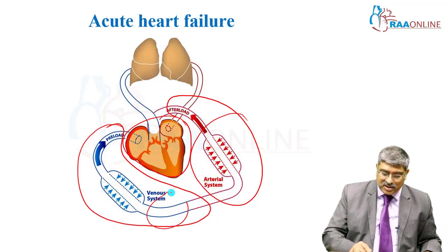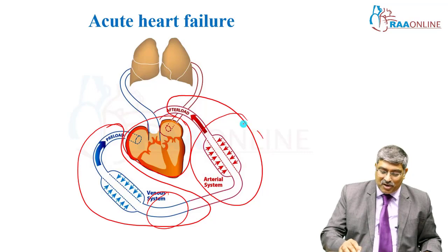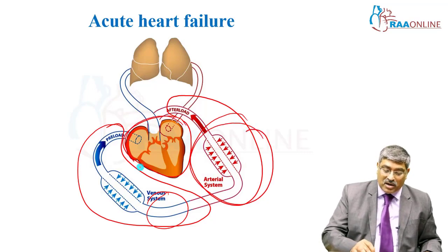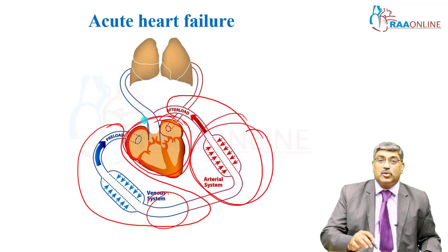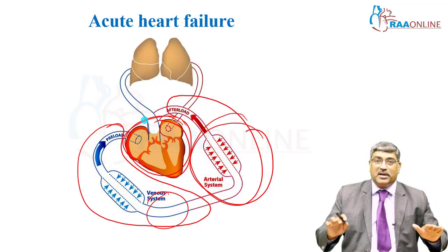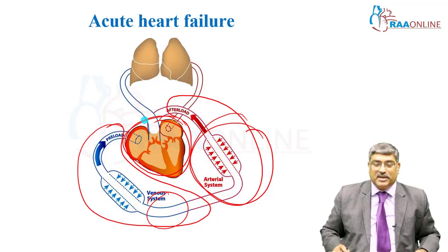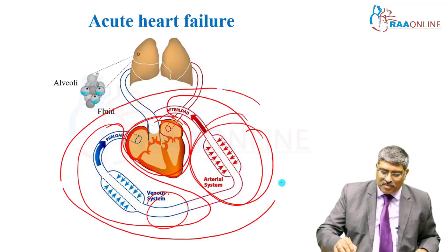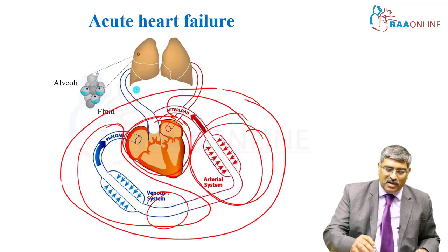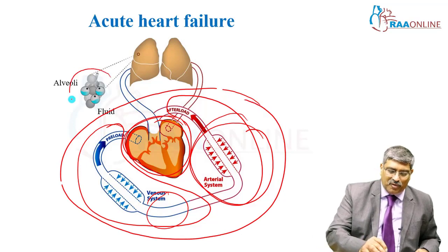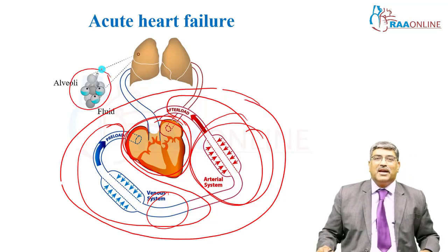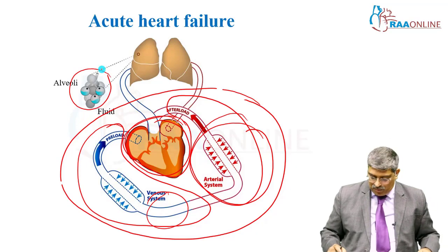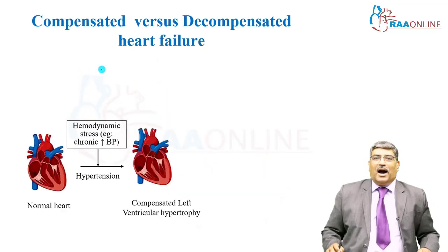Your volume management has to be accurate, your afterload reduction should be good, and contractility should not be deteriorated further. If these three things are not managed properly, fluid is going to go into the alveoli and the patient will have acute pulmonary edema.